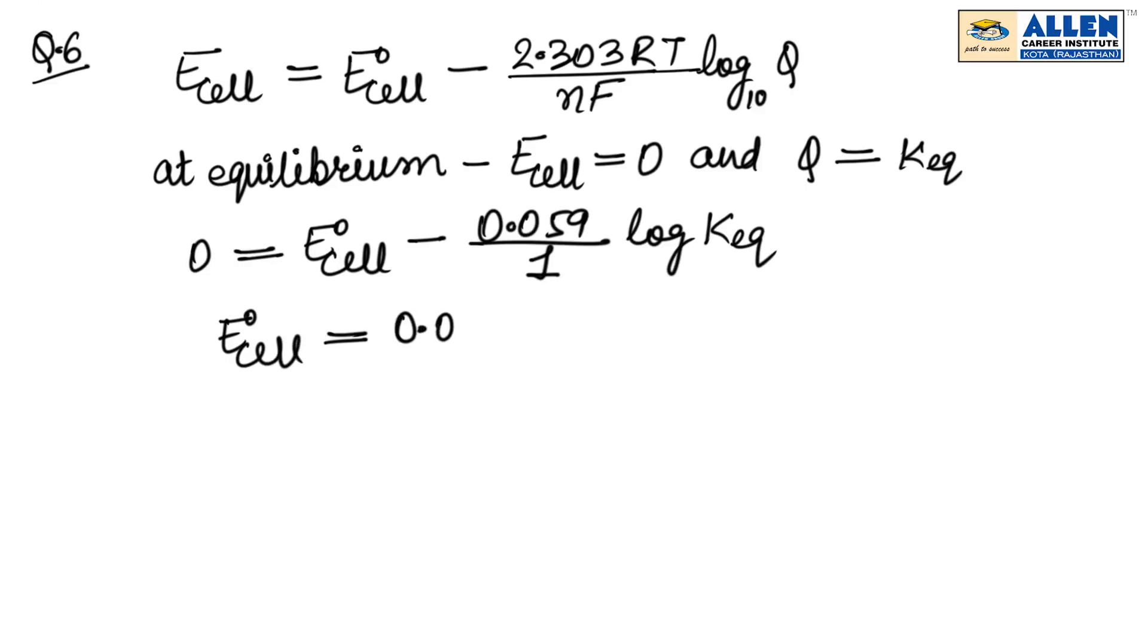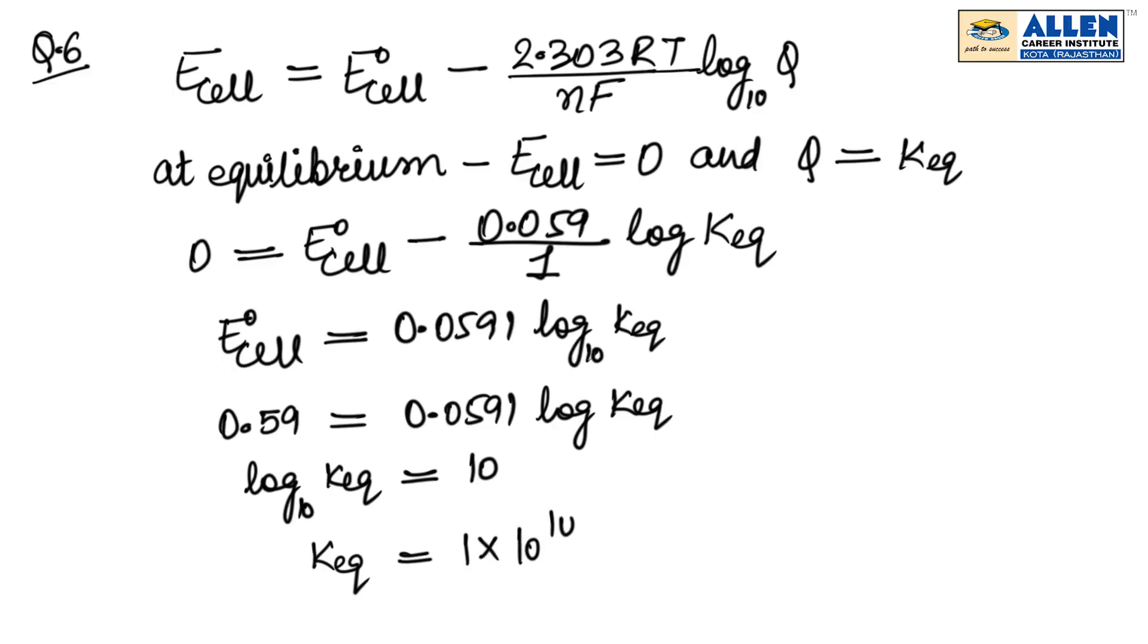E naught cell is equal to 0.0591 log equilibrium constant. And in question, E naught cell is 0.59V. So we get log equilibrium constant is equal to 10, and equilibrium constant will be 1 into 10 raised to the power plus 10. So final answer of equilibrium constant is 1 into 10 raised to the power 10.